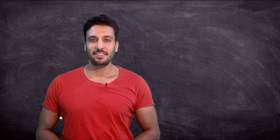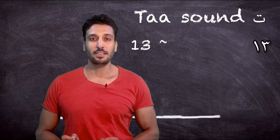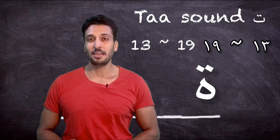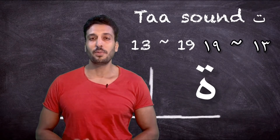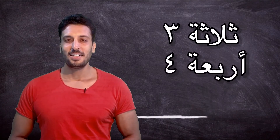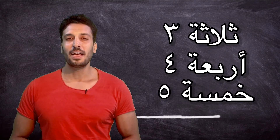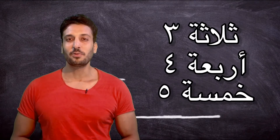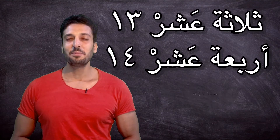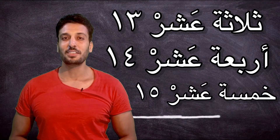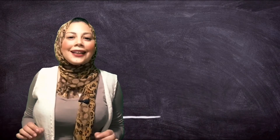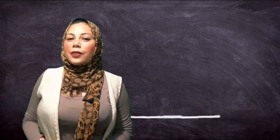Have you noticed that we add a sound at the end of the numbers from 13 to 19? That's because a sound — or about a sound — turns from a 'huh' sound into a 'teh' sound when it's followed by another word. Like 3, 4, 5 — all of them ended with a 'huh' sound, but when I say 13, 14, 15 with 10, the last sound of the word changes from 'huh' to 'teh'. We'll make a special video for التأ المربوطة later, but now let's continue with the numbers.